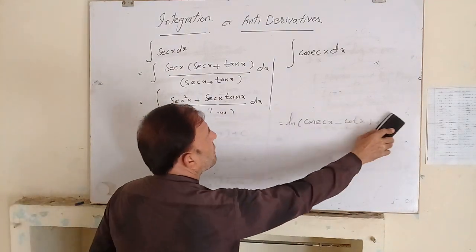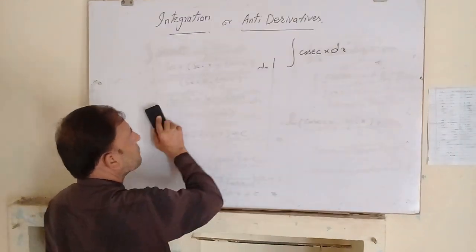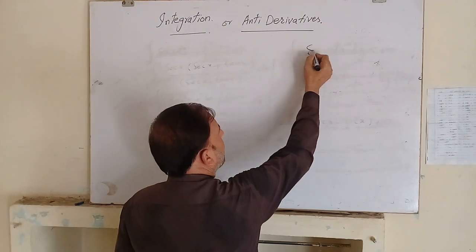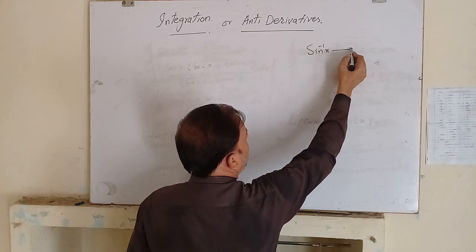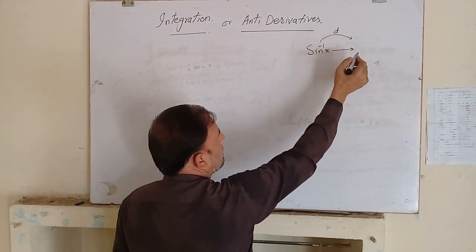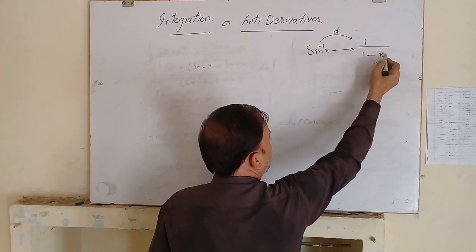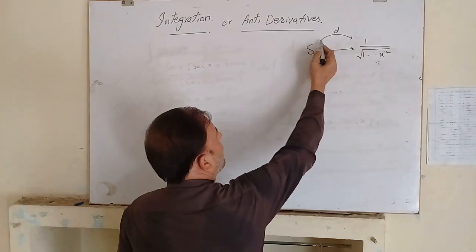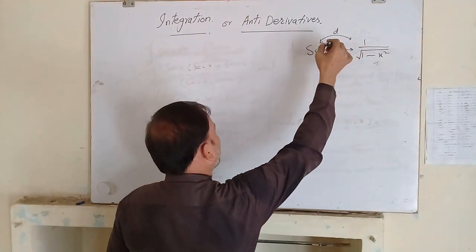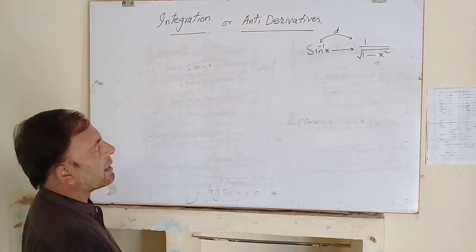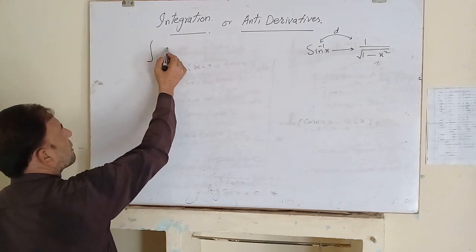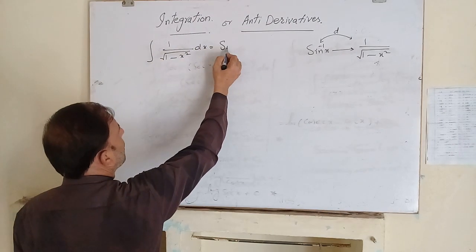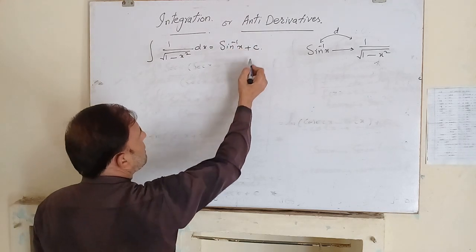Now we discuss the inverse trigonometric functions. We have the formula that the derivative of sin inverse of x is equal to 1 over the square root of (1 minus x squared). Then the integration of 1 over square root of (1 minus x squared) dx is equal to sin inverse of x plus c.